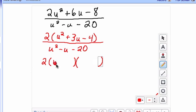So we get u and u here. And we know that if we had a positive 4 times a negative 1, that multiplies to give me a negative 4. But the positive 4 and a negative 1 add to give me a positive 3.